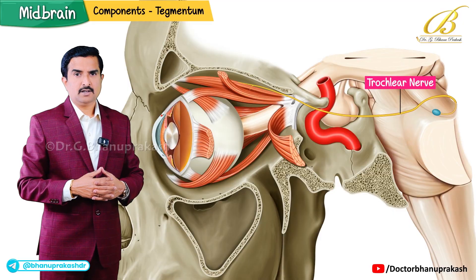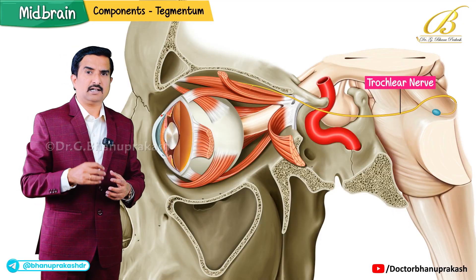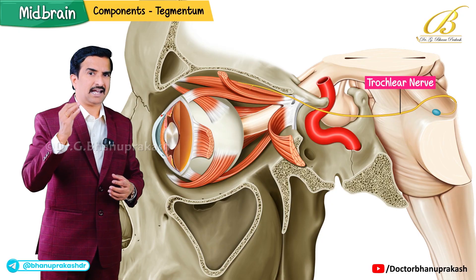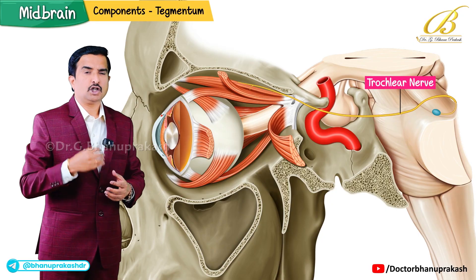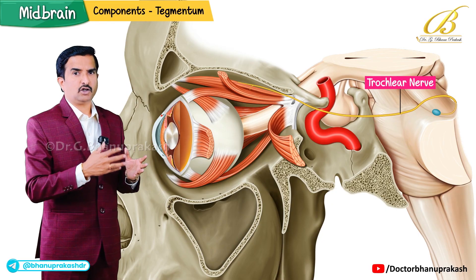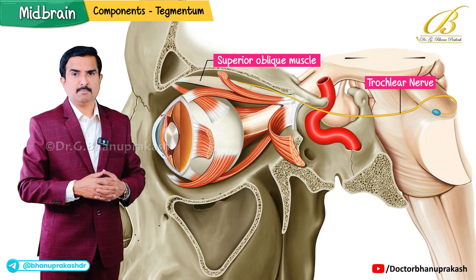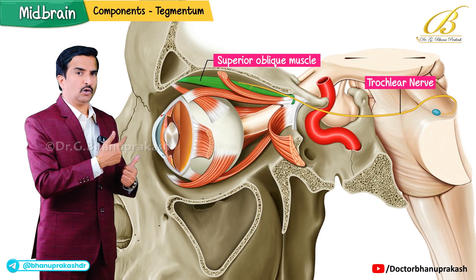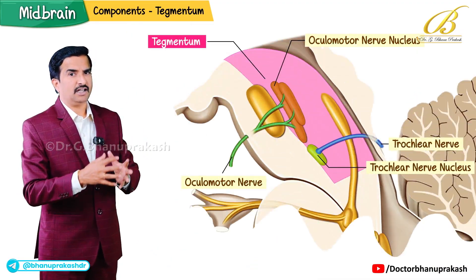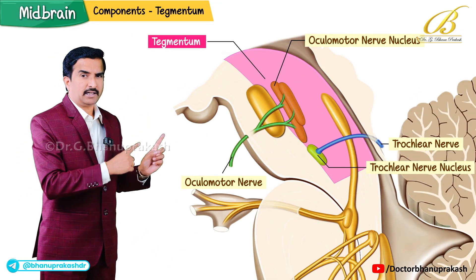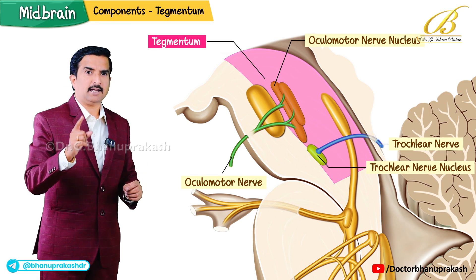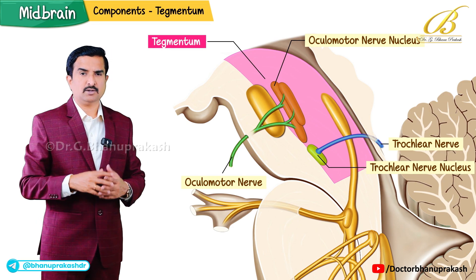The trochlear nerve is unique because it is the only cranial nerve that emerges from the posterior aspect of the brainstem. It controls the superior oblique muscle, which helps with downward and inward eye movement. Both of these cranial nuclei are located in the tegmentum of the midbrain, providing fine control over eye movement.